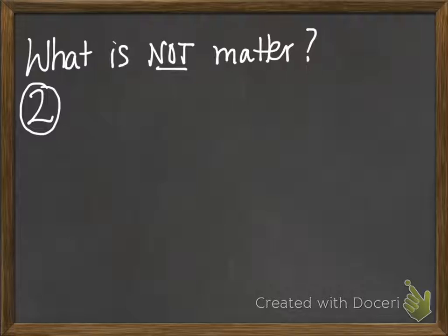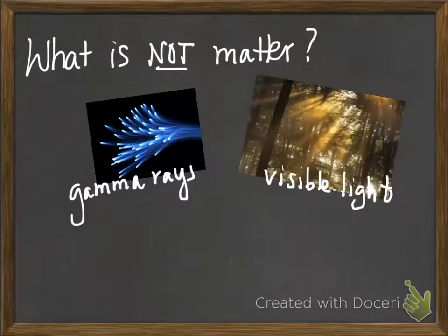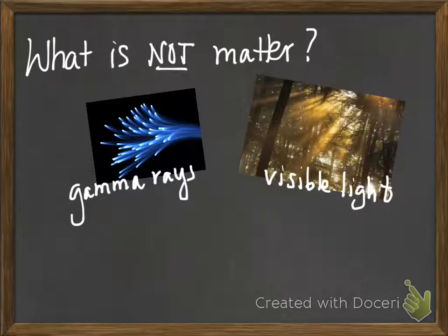Okay, these get a little bit weirder. Two things that are not matter: something like gamma rays, or visible light — the light that comes from our sun. Neither of these things are matter. They're both energy. They don't have mass. They don't take up space.